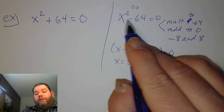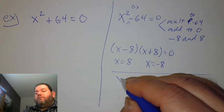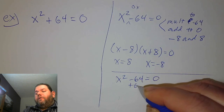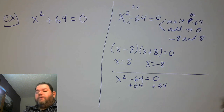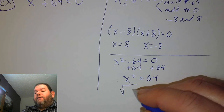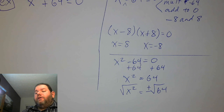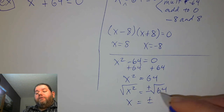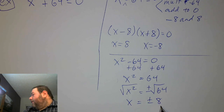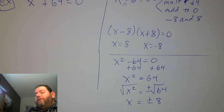Another way to work x squared minus 64 equals 0 is to move the 64 to the right: x squared equals 64. Then using the square root property, we take the square root of both sides and introduce a plus or minus sign on the right. So x equals plus or minus the square root of 64, which is 8. So it's either positive 8 or negative 8 — corresponding to what we found by factoring.